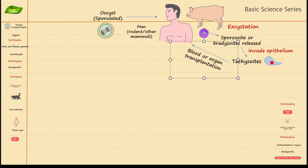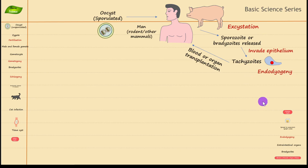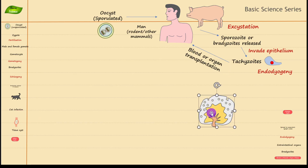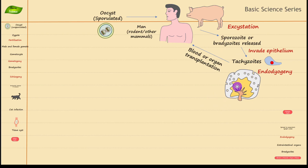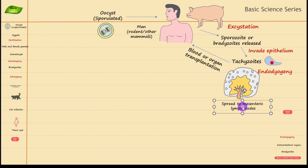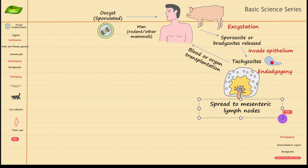This is highly important to understand: tachyzoites can also cause infection through blood transfusion. Tachyzoites then increase in number — this is the process by which tachyzoites proliferate inside the host. Once tachyzoites are in the system, they can invade the mesenteric lymph nodes, as shown in the illustration.